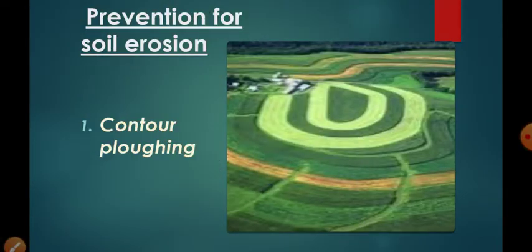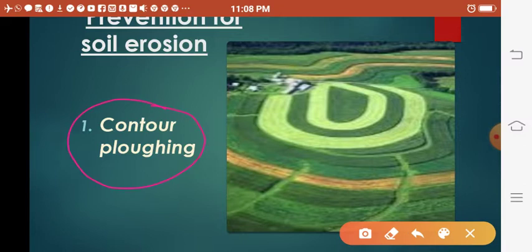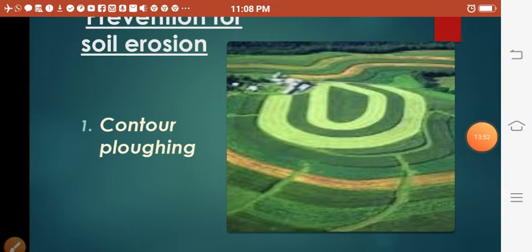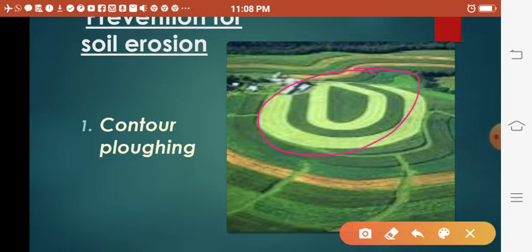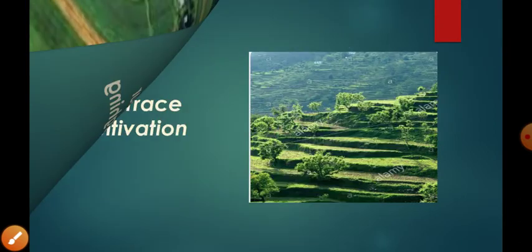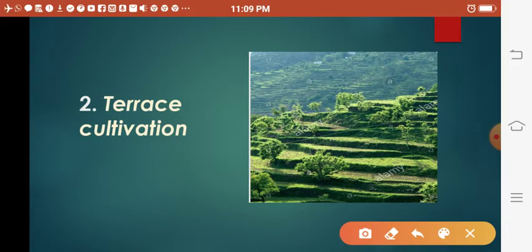Some preventive measures can reduce soil erosion. The first is contour plowing, where plowing along contour lines can decelerate the flow of water down slopes. The second is terrace cultivation, which is very common in hilly areas. Steps are cut out on slopes making terraces, and terrace cultivation restricts erosion. The western and central Himalayas have well-developed terrace farming.